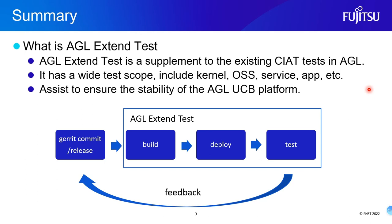The position of Agile Extended Test in the CRIT is shown in the figure. The previous CRIT process was: first release, then build, deploy, and test manually. However, the current Agile Extended Test contains three steps of build, deploy, and test, with four automatic executions.